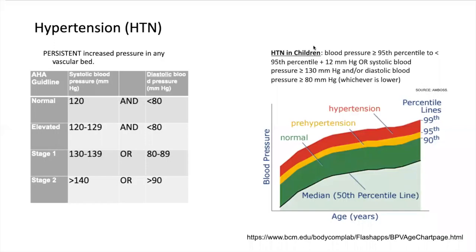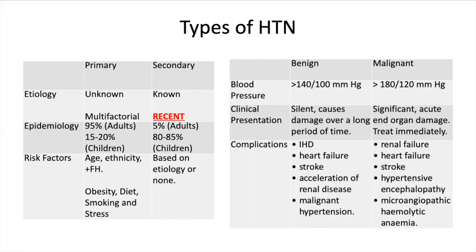Let us begin with hypertension, a very common disease that affects one in three adults and is a precursor to many chronic diseases. In essence, hypertension is persistent increased pressure in any vascular bed. According to the American Heart Association, 140 over 90 would be a safe bet as the cutoff value for hypertension in adults. Hypertension in children is more complicated, and 130 over 80 could be considered the cutoff, but comparative studies with percentile charts must be carried out in clinical practice.